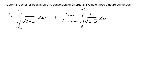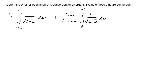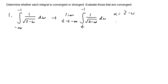We use limit notation because we can't directly plug infinity into a function. To evaluate this integral, I'll use u-substitution. Set u equal to two minus w, so du equals negative dw, meaning dw equals negative du. Now we can substitute everything back into the integral.